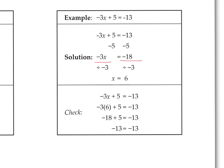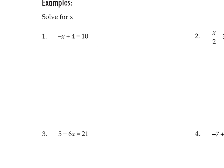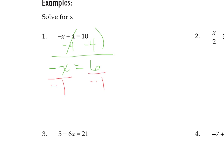Now example 1: negative x plus 4 equals 10. We have a negative x and a plus 4. First, get rid of the plus 4 by doing minus 4 on both sides — those cancel, giving negative x equals 10 minus 4 is 6. We're not done yet — this negative in front of x is really negative 1, a multiply. To undo multiply, we divide by negative 1 on both sides. Negative 1 divided by negative 1 makes positive 1x; 6 divided by negative 1 makes negative 6. So x equals negative 6.